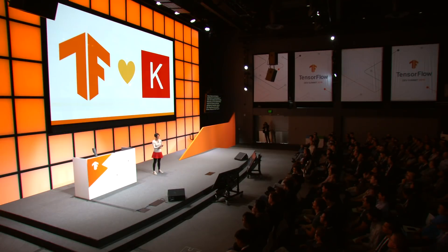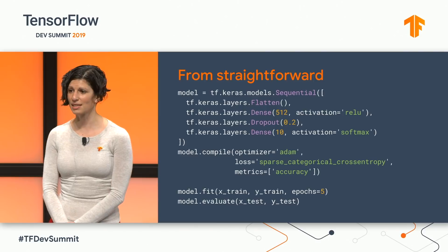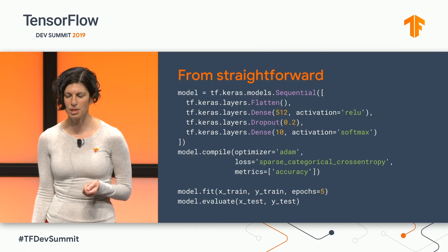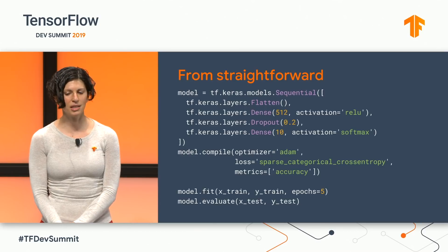So as you mentioned, I'm an Engineering Manager for TensorFlow. My team works on high-level APIs, so that's Estimator and Keras, and my talk at the Dev Summit this year was about what we're bringing in 2.0 for high-level APIs, and specifically about Keras and how that's the primary high-level API that we're consolidating a lot of things under, and bringing the scale of Estimator into Keras and how we're going to be doing that in 2.0.